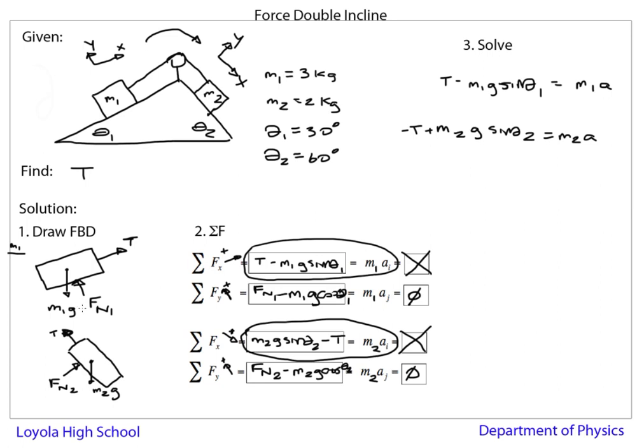In this problem, the force model has the same idea. We draw an FBD, we sum the forces, and then step three is just to solve the math part. If I go one more step with this, I'll solve for a here. a is equal to T minus m1 g sine theta 1 over m1.